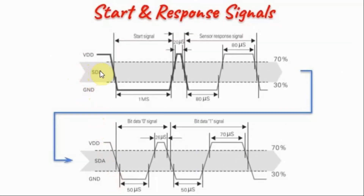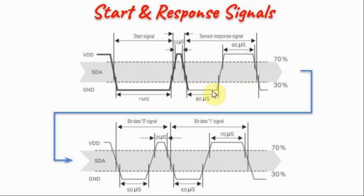Over the serial data line, the microcontroller sends a start signal which is 1 ms wide, and then the sensor acknowledges with a response signal. First, it sends a low pulse of 80 microseconds, and then a high pulse of 80 microseconds.